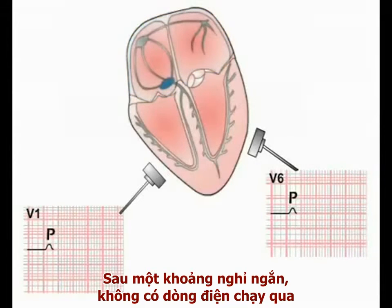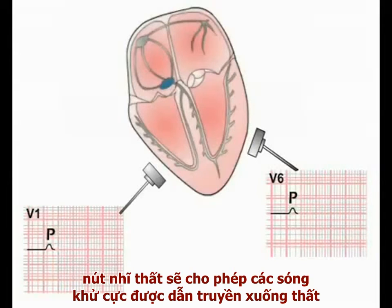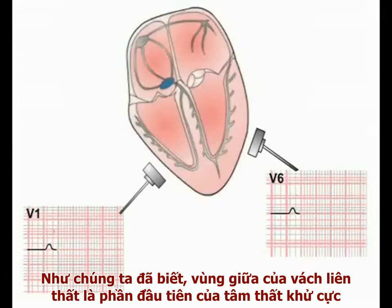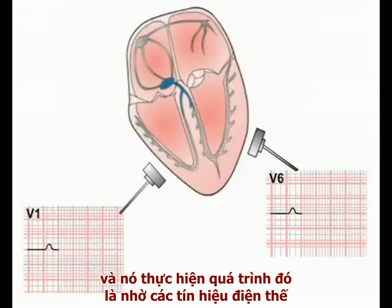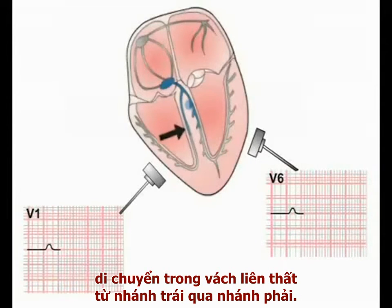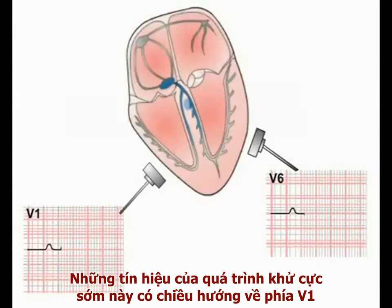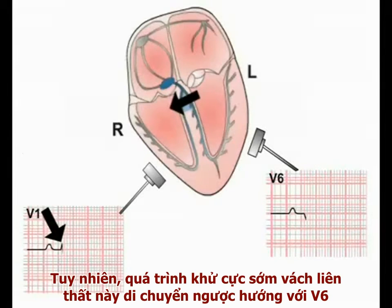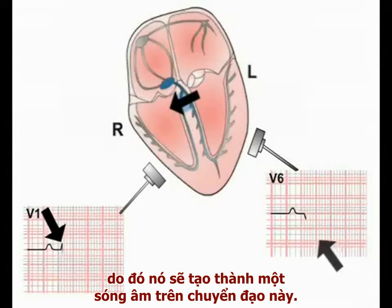After a short delay in which no current is flowing, the AV node allows the depolarisation signal to travel into the ventricles. The mid-zone of the intraventricular septum is the first piece of ventricular muscle to depolarise, and it does so by signals spreading across the septum from the left towards the right bundle branch. This early depolarisation signal is moving towards V1 and therefore produces a positive deflection on the ECG paper. However, this septal current is moving away from lead V6, producing an initial negative deflection in this lead.